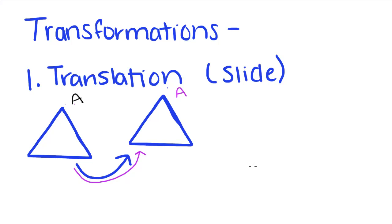If we were to describe this transformation, we said we translated it, translated triangle A over, or right, and up.